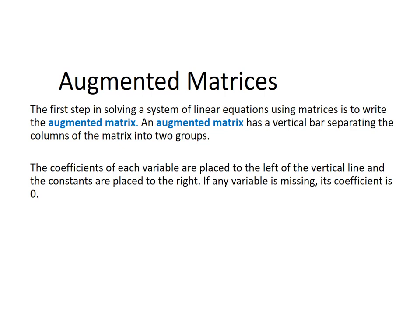The coefficients of each variable are placed to the left of the vertical line, and the constants are placed to the right. If any variable is missing, its coefficient is zero.